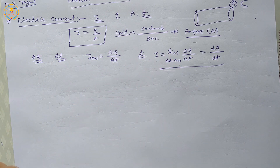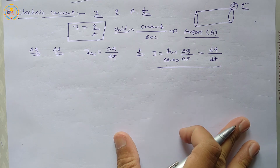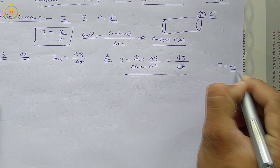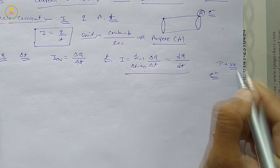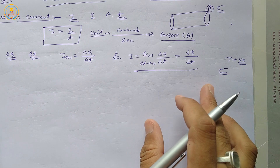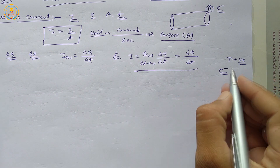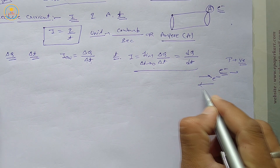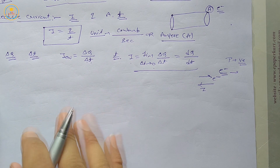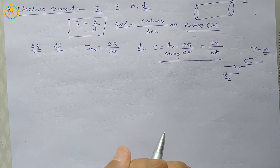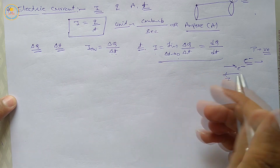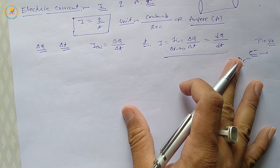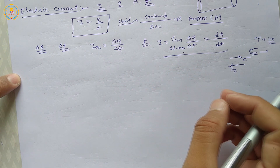The unit of electric current is ampere. The direction of electric current is in the direction of flow of positive charge, meaning positive ions, and opposite to the flow of electrons. So in a circuit, the direction of electric current is opposite to the flow of electrons. But current is a scalar quantity.